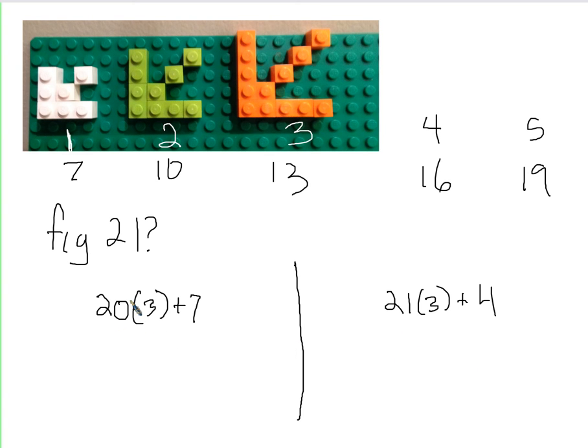So, whether we take 1 less than the figure number times 3 plus 7, for the original number of blocks in the first figure, or the figure number times the change plus this 4, it still works. So, the homework is, what's up with the 4?